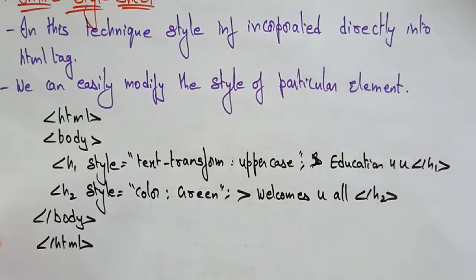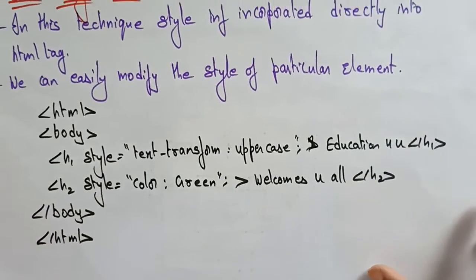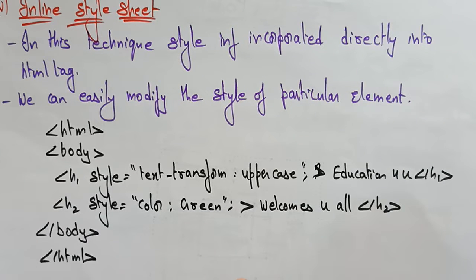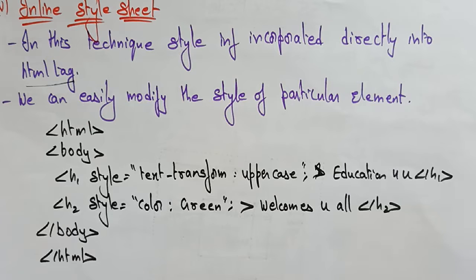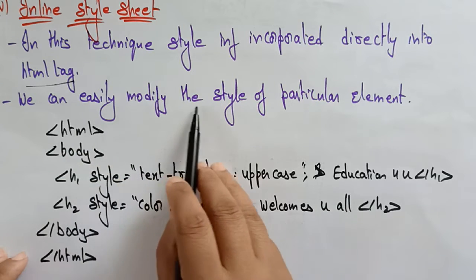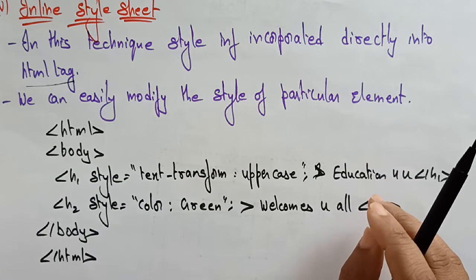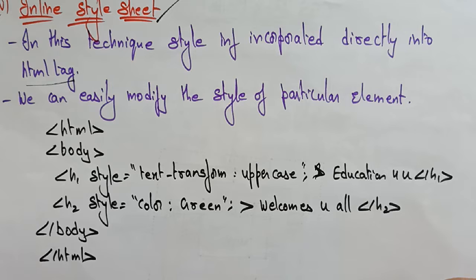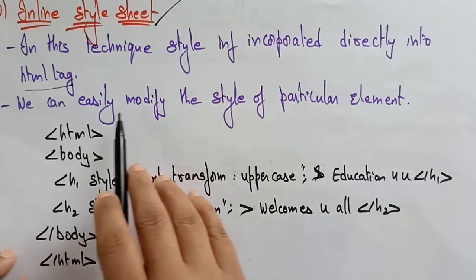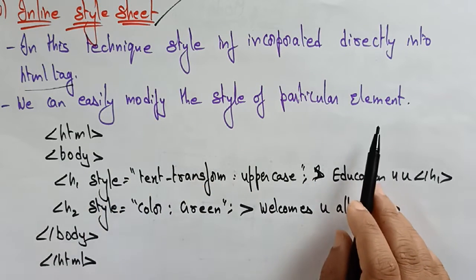Another type of cascading style sheet is the inline style sheet — this is the last technique. In this technique, style information is incorporated directly into the HTML tag. Inline means within the body you can call the style sheet. We can easily modify the style of a particular element. If you want to change only a specific element, it's better to go for inline. If you want to change the document's overall look every time, you can go for external CSS.